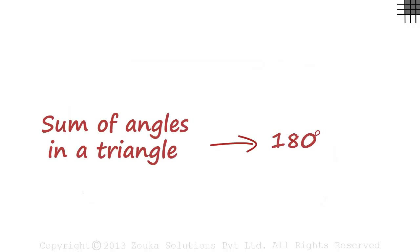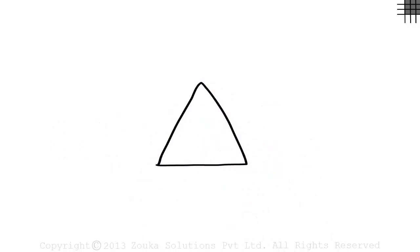We know that the sum of angles within a triangle is 180 degrees. Let's prove that for triangle ABC. To prove that, we need to do a small bit of construction.